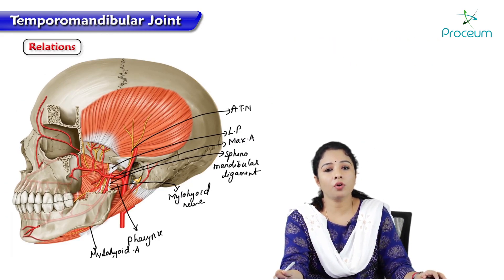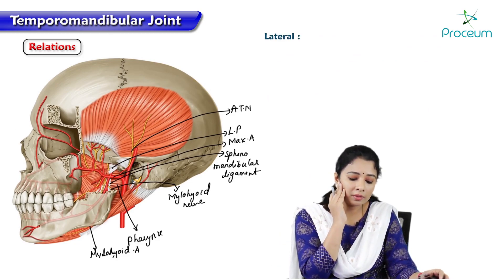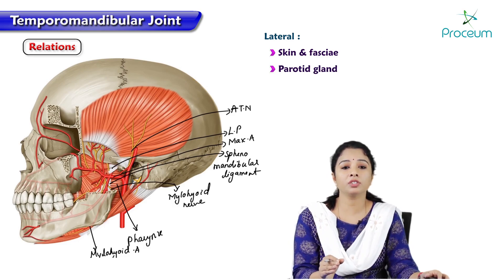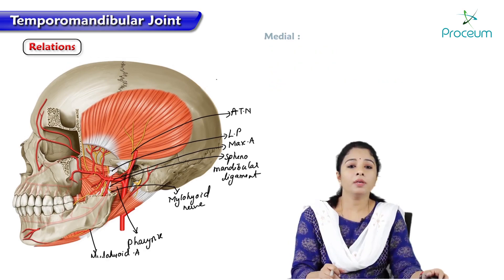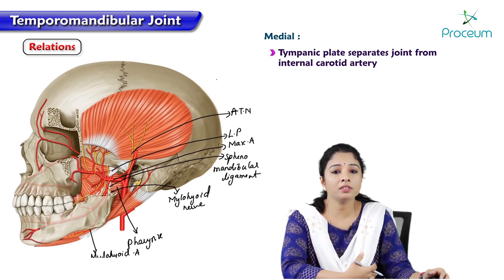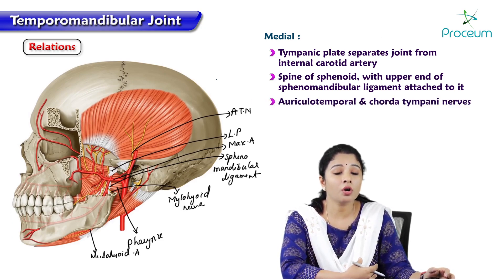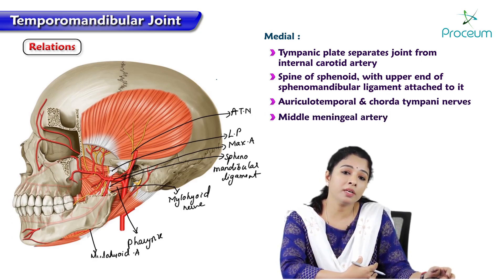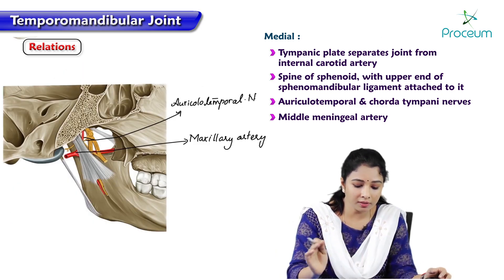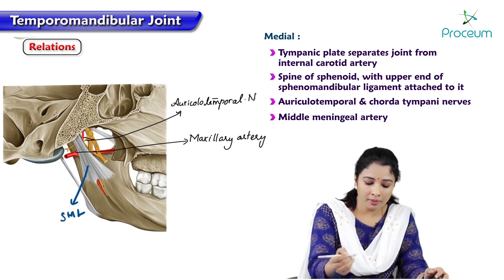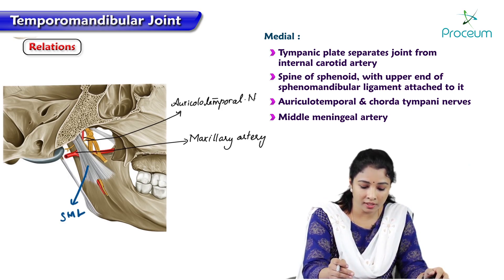Now let us understand the relations of the temporomandibular joint. Laterally it is covered by skin, fascia, the parotid gland, and temporal branches of the facial nerve. Medially it is related to the tympanic plate, which separates the joint from the internal carotid artery, as well as the spine of the sphenoid with the upper end of the spinomandibular ligament, the auriculotemporal nerve, chorda tympani nerve, and the middle meningeal artery.